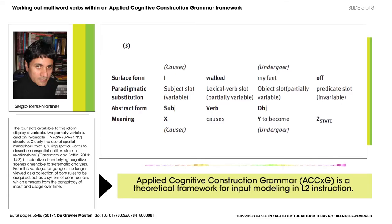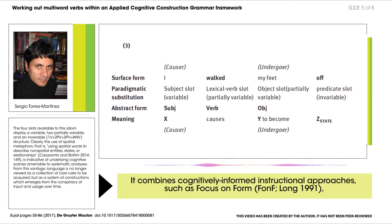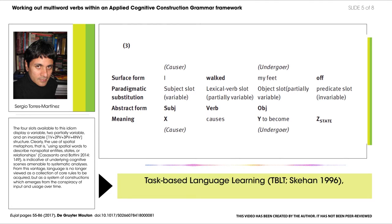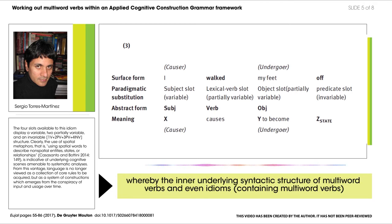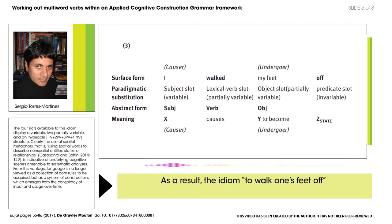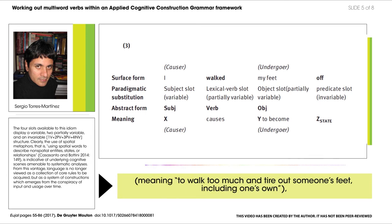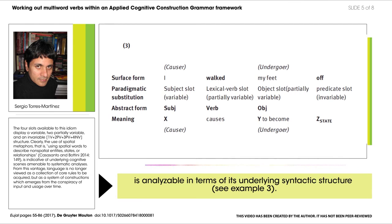Applied Cognitive Construction Grammar is a theoretical framework for input modeling in L2 instruction. It combines cognitively informed instructional approaches such as focus on form, text-based language learning, data-driven learning, and paper-based data-driven learning. These rationales aptly account for the embodied component of language learning, whereby the underlying syntactic structure of multi-word verbs and even idioms containing multi-word verbs is active. As a result, the idiom 'to walk one's feet off', meaning to walk so much as to tire out someone's feet including one's own, is analyzable in terms of its underlying syntactic structure — see Example 3.